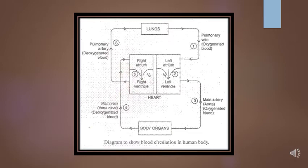After the contraction of the right auricle, the blood is pushed to the right ventricle, number 5 here. When the right ventricle contracts, then the tricuspid valve V2 prevents the blood from flowing back into right auricle.